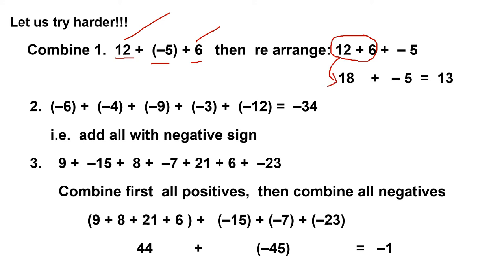Then we include plus negative 5. Notice that they have different signs, so we subtract 18 and 5, which gives us 13. But since 18 has the bigger absolute value, the sign is positive, so positive 13 is the answer.